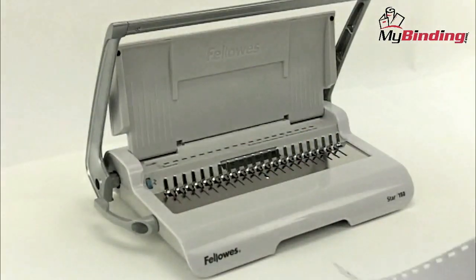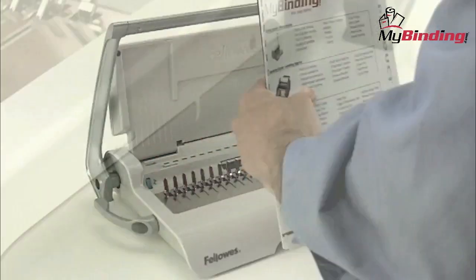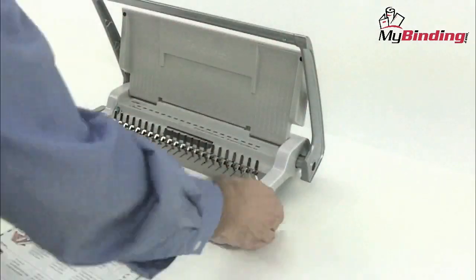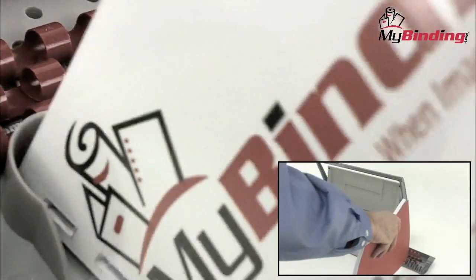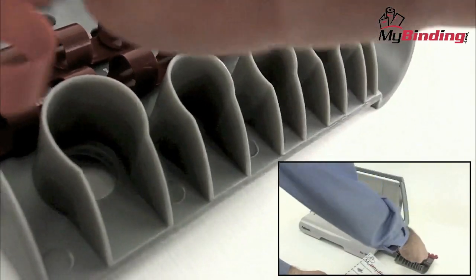When all of your punches are made, gather your materials together, you're now ready for the binding step. There's a small tray on the right side of the machine that slides out. Here you can store a few combs, but more importantly, there's a great little tool to help you determine which size comb is best for your project. Slide your completed project in and choose your comb.